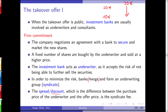If the bank knows the fair price is 20 euros but recommends 10, the stock rises to 20 on the first day. The company with 1 million shares sold at 10 euros raises only 10 million, when it could have raised 20 million — wasted capital. The investment bank then captures that profit difference. This is essentially the syndicate fee — an additional cost the company pays to the investment bank.